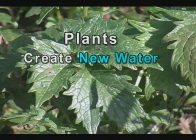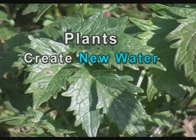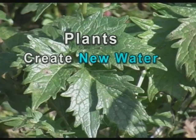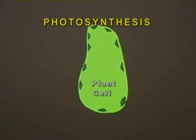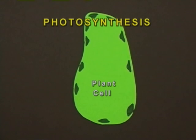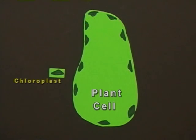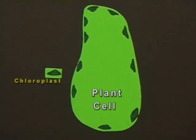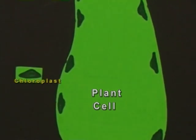Plants convert sunlight into chemical energy and create new water. This process is called photosynthesis and occurs in specialized plant cells. Within these cells are organelles called chloroplasts. This is where new water is formed.